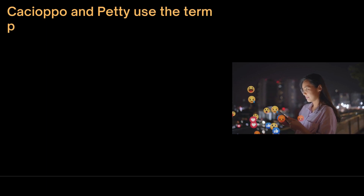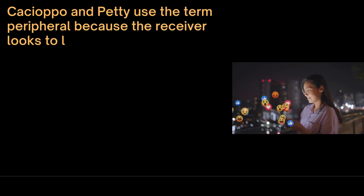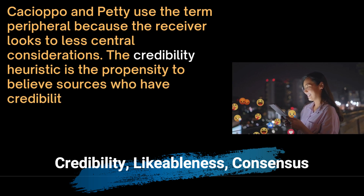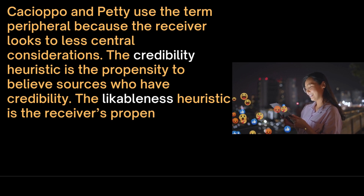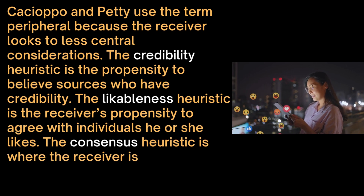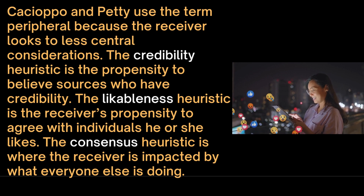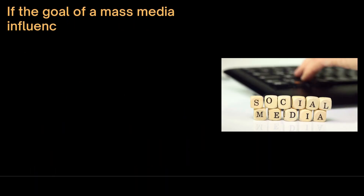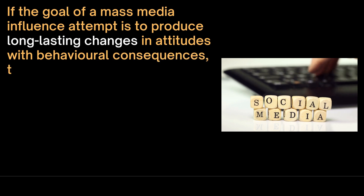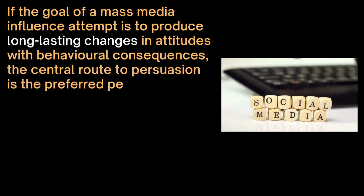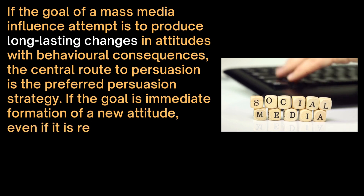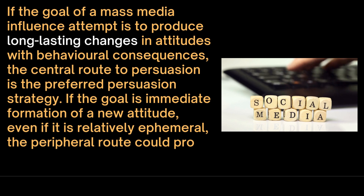Cacioppo and Petty use the term 'peripheral' because the receiver looks to less central considerations. The credibility heuristic is the propensity to believe sources who have credibility. The likableness heuristic is the receiver's propensity to agree with individuals he or she likes. The consensus heuristic is where the receiver is impacted by what everyone else is doing. In the mass media, for example, if the goal is to produce long-lasting changes in attitudes with behavioral consequences, the central route to persuasion is the preferred persuasion strategy. If the goal is immediate formation of a new attitude, even if it is relatively ephemeral, the peripheral route could prove acceptable.